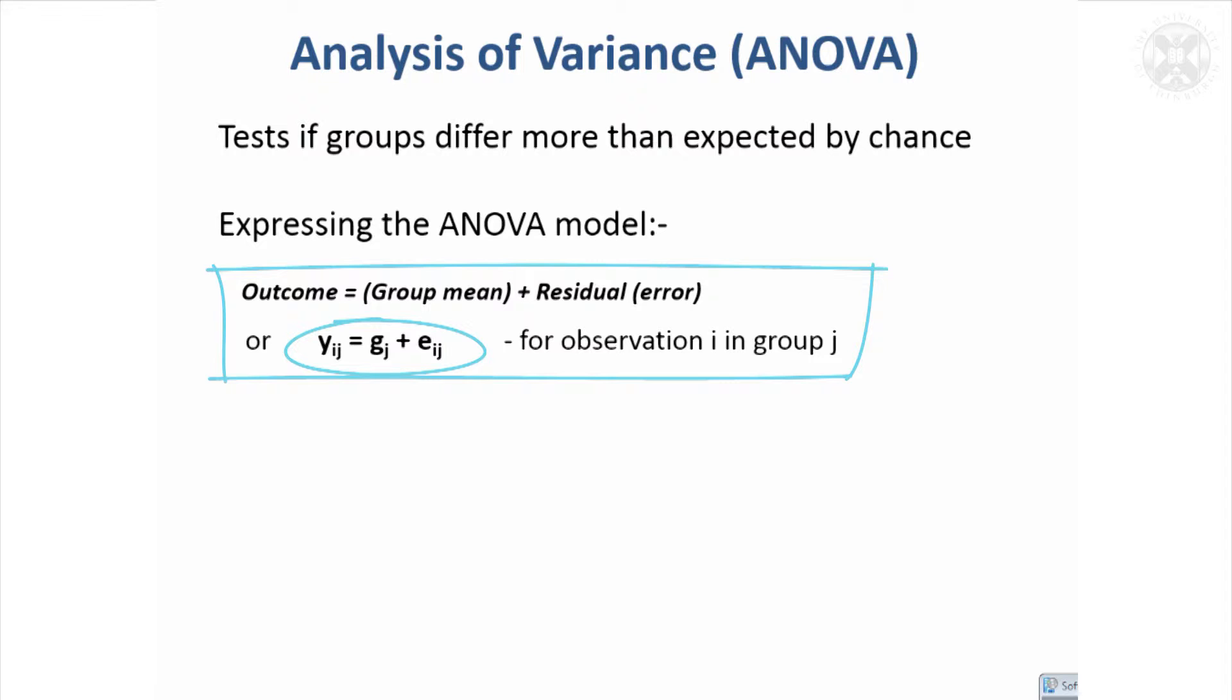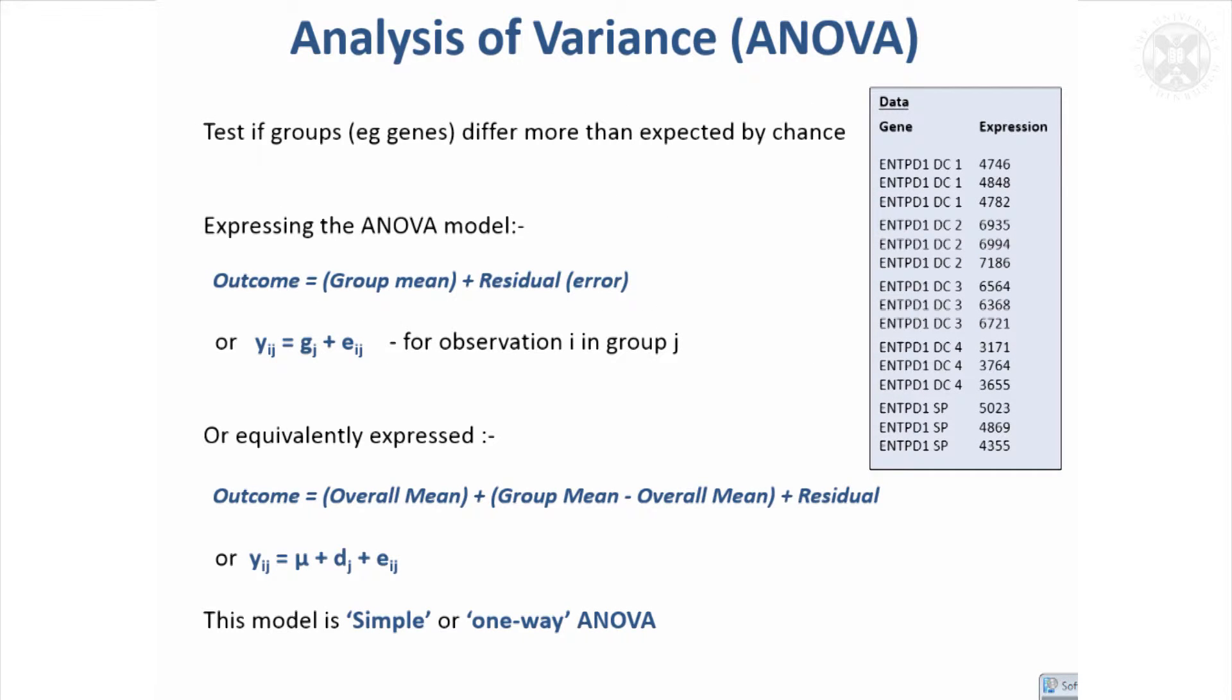Another way you might express that is: you've got a value Y on the i-th observation in the j-th group. This Gj is the group mean for group j, and then you've got an error term for that i-th observation in group j. Just to help you imagine this, this might be data that measures expression of various different genes, and you might decide to see if that expression is different between—here we've got five different genes. So the gene would be the group, and this Gj would be the mean of each of these three values.